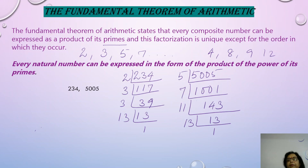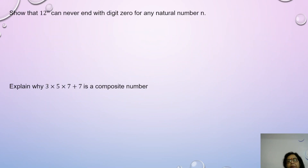So the Fundamental Theorem of Arithmetic basically states that the prime factors of a composite number are unique for that particular number. All composite numbers can be written as the product of its primes. So this is the statement of the Fundamental Theorem of Arithmetic. Now we move on to an application of this particular concept.